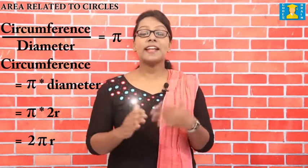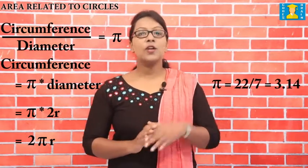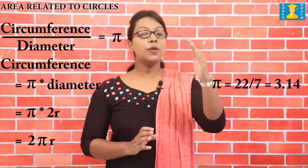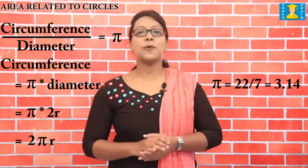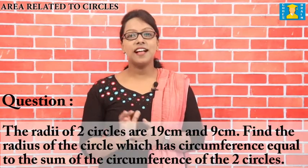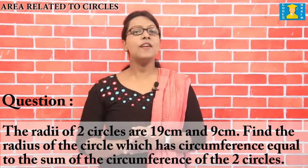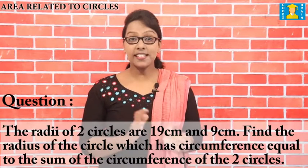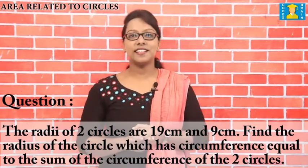For practical purposes, we generally take the value of pi as 22/7 or 3.14 approximately. Let's see an example. The radii of two circles are 19 cm and 9 cm respectively. Find the radius of the circle whose circumference equals the sum of the circumferences of the two circles.